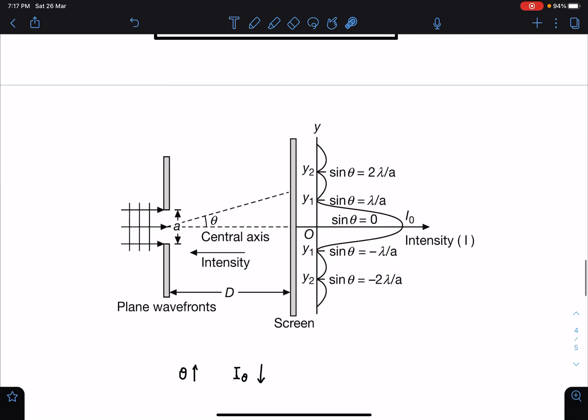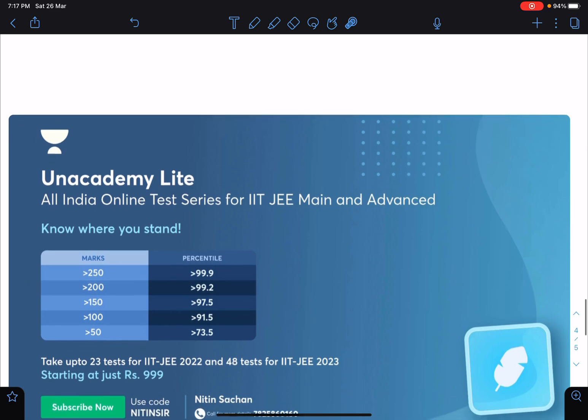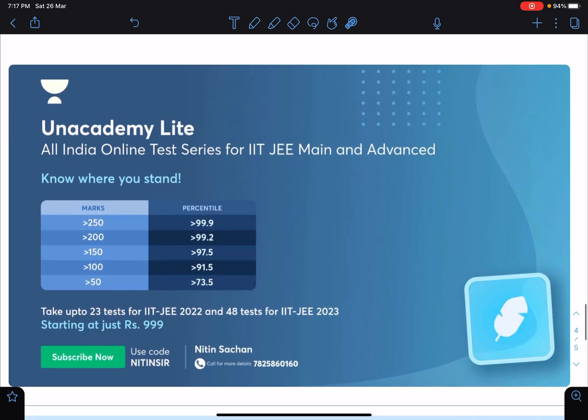This is it guys in this video and here there is another information. Guys you can use the Unacademy Lite, this is all India online test series for JEE mains and advance and you can check your score and percentile to have a clear idea that where your rank and percentile will be. You can write up to 23 tests for JEE 2022 and 48 tests for JEE 2023 and it is just a triple nine and you can use my code NITINSIR for this. If you want to know more you can call on this number also.